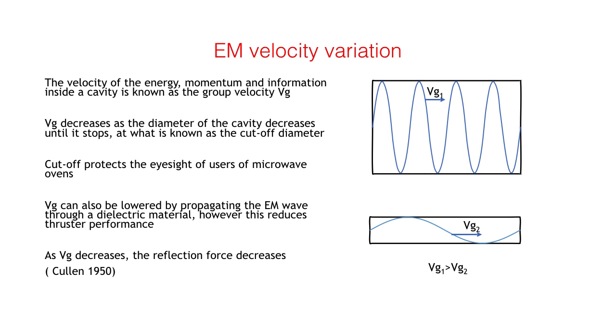Vg is the group velocity of the energy, momentum and information in any guided wave structure. In a circular cavity, Vg varies with the diameter of the cavity and decreases with decreasing diameter until the velocity is zero. This is known as the cut-off point.